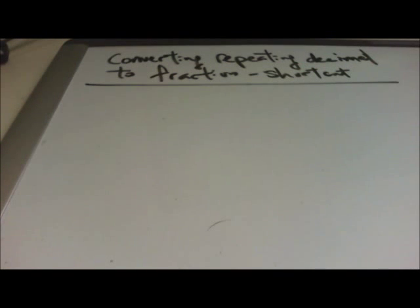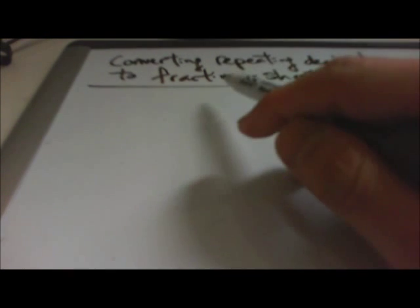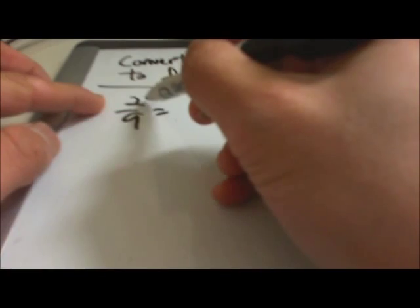Alright, now we are trying to learn how to convert repeating decimals to fractions using shortcuts. We're going to do shortcuts first, and then a long version after you understand how to do it faster. The most simple one: normally we have 2/9, right? It's over 9, so you're going to get 0.222222 repeating.